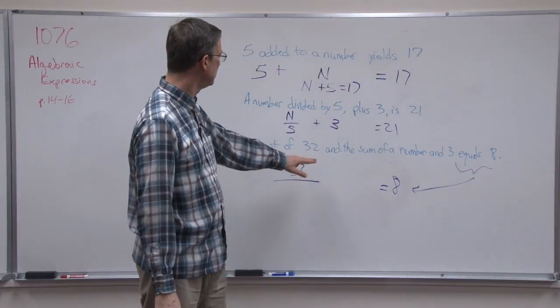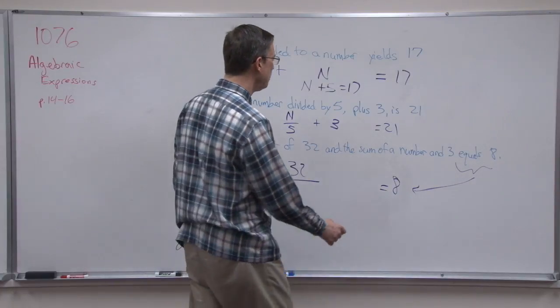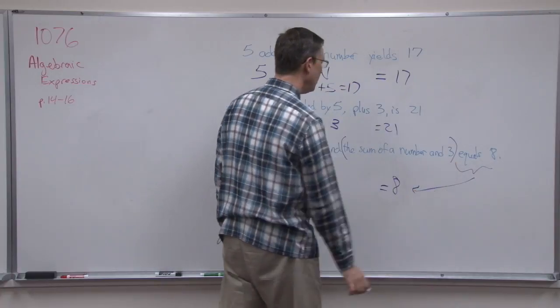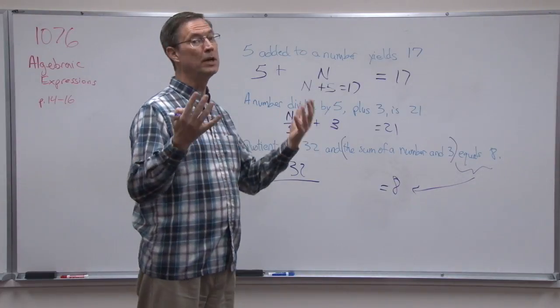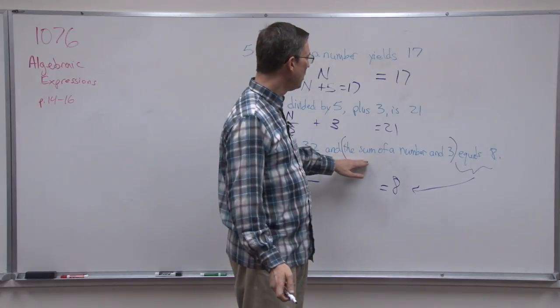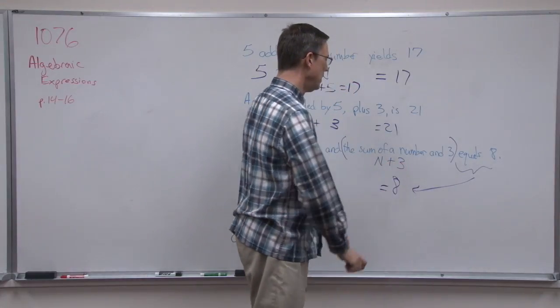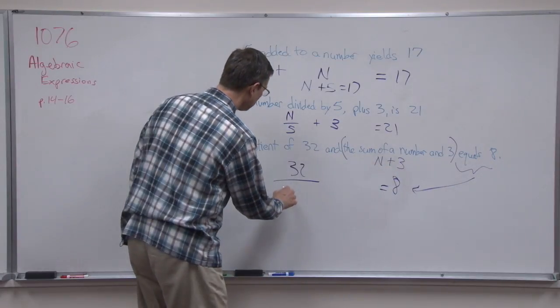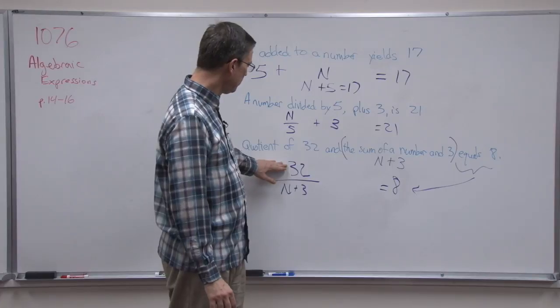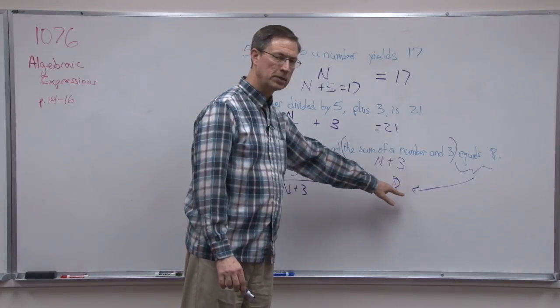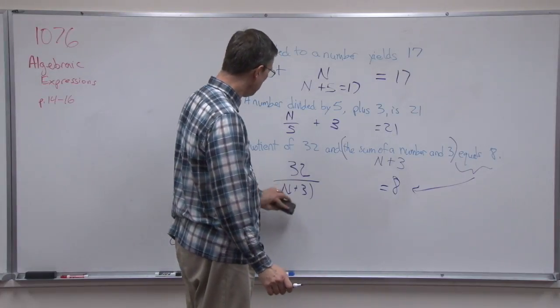But notice it says the quotient of 32 and... now what are we dividing by? 32 is being divided by something. I'm going to put this in parentheses. The sum of a number and 3. So it's kind of like we have a little algebraic expression inside a bigger algebraic expression. Just this part, the sum of a number and 3: sum means plus a number, N and 3. So just this, N plus 3, becomes the denominator here. N plus 3. And I have 32 in the numerator. 32 over N plus 3 equals 8. You could leave parentheses around that. I typically wouldn't, but that would not make it wrong.